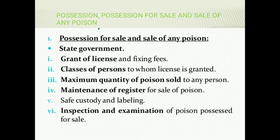Possession and possession for the sale and the sale of any poisons — the central government has authority to control the import of the poison, and the state government has the power to regulate the possession for sale and sale of any poison in each state. State government may provide some rules for the sale of the poison.